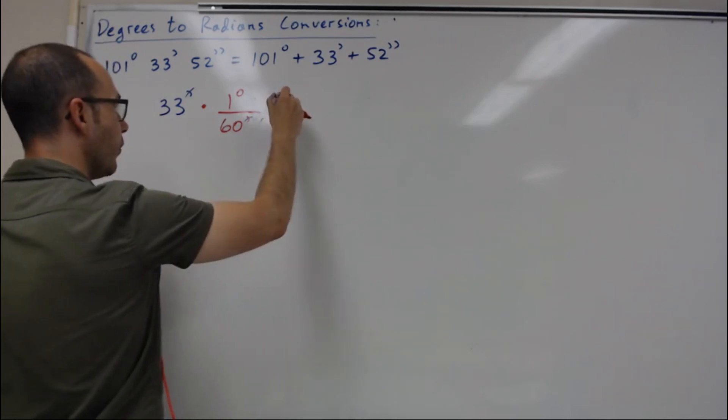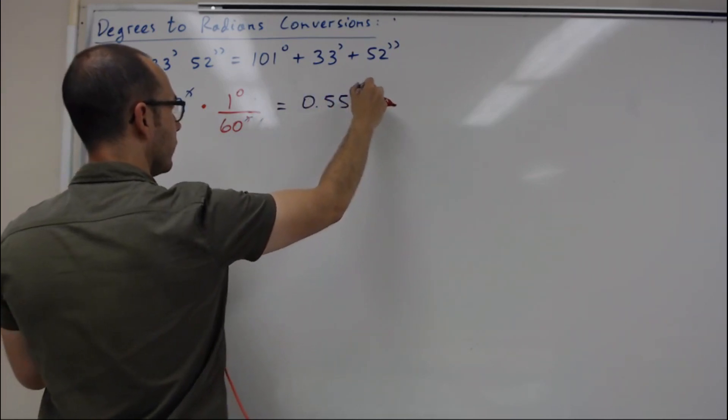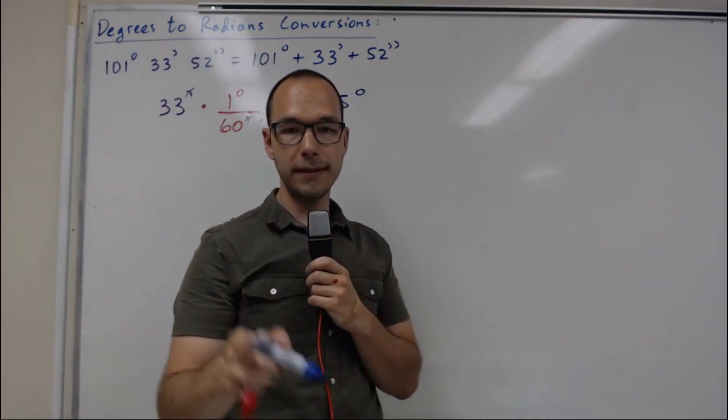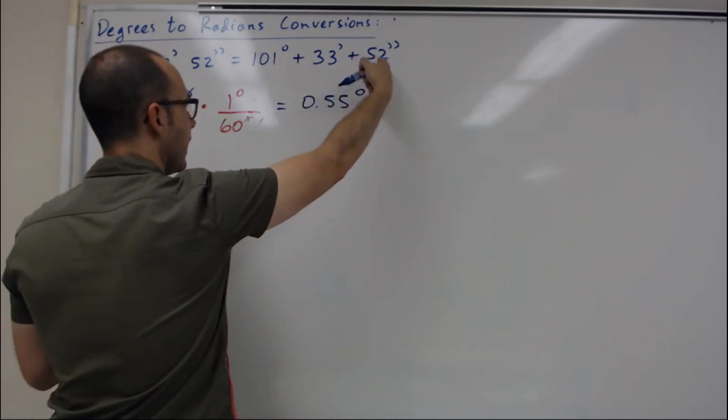0.55 degrees. So you first convert the minutes into degrees and then I will convert the seconds right here.